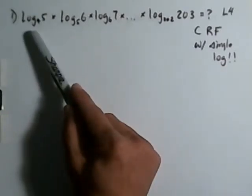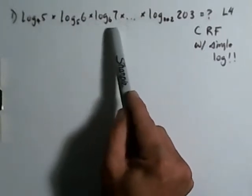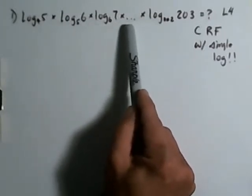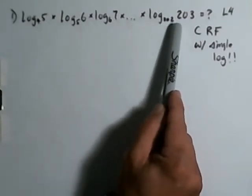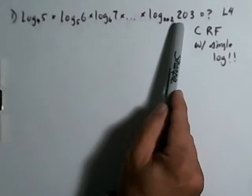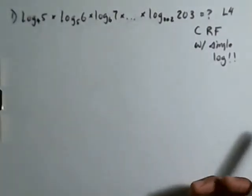So let's look at this. Log base 4 of 5 times log base 5 of 6 times log base 6 of 7 times dot dot dot ellipsis. That means it goes on in this pattern until you get to log base 202 of 203. And I want you to give me what that answer is and then simplify this expression to a single one.